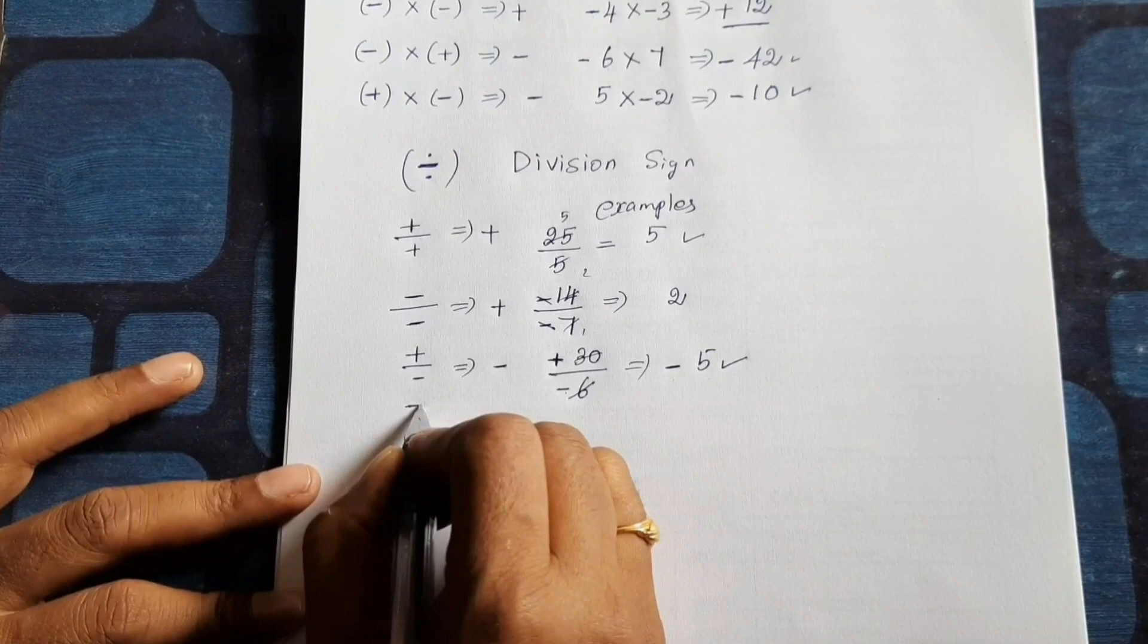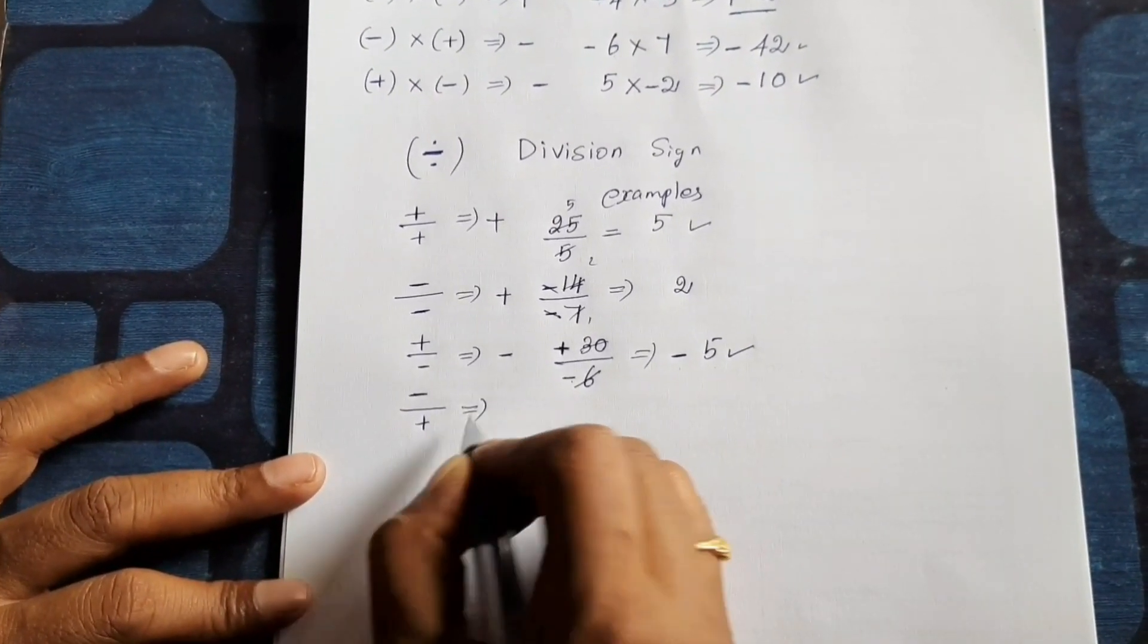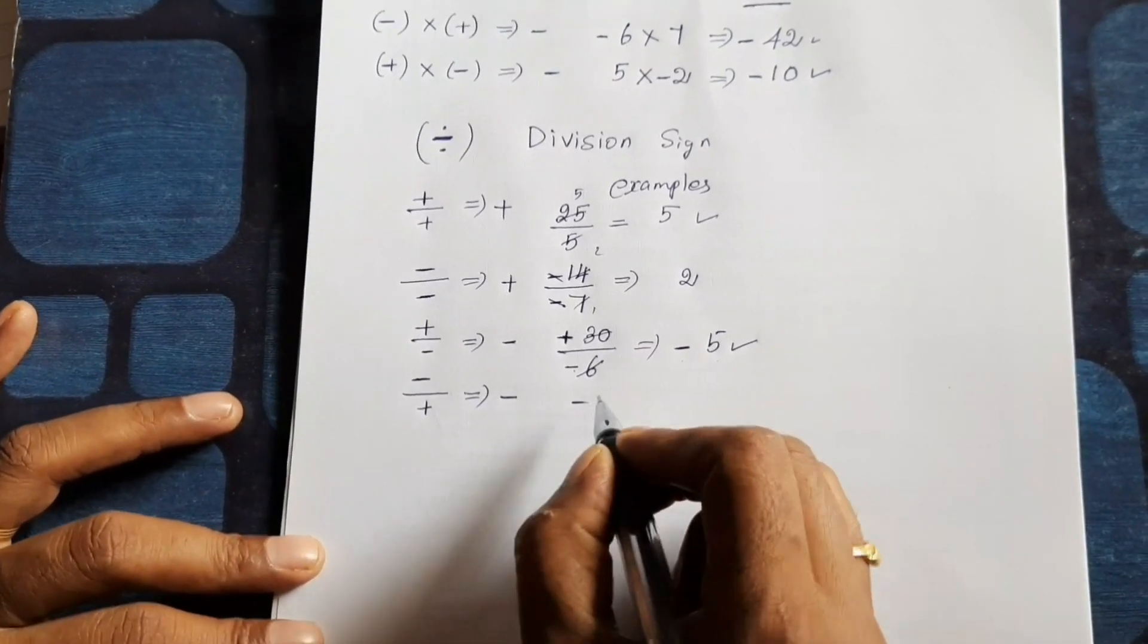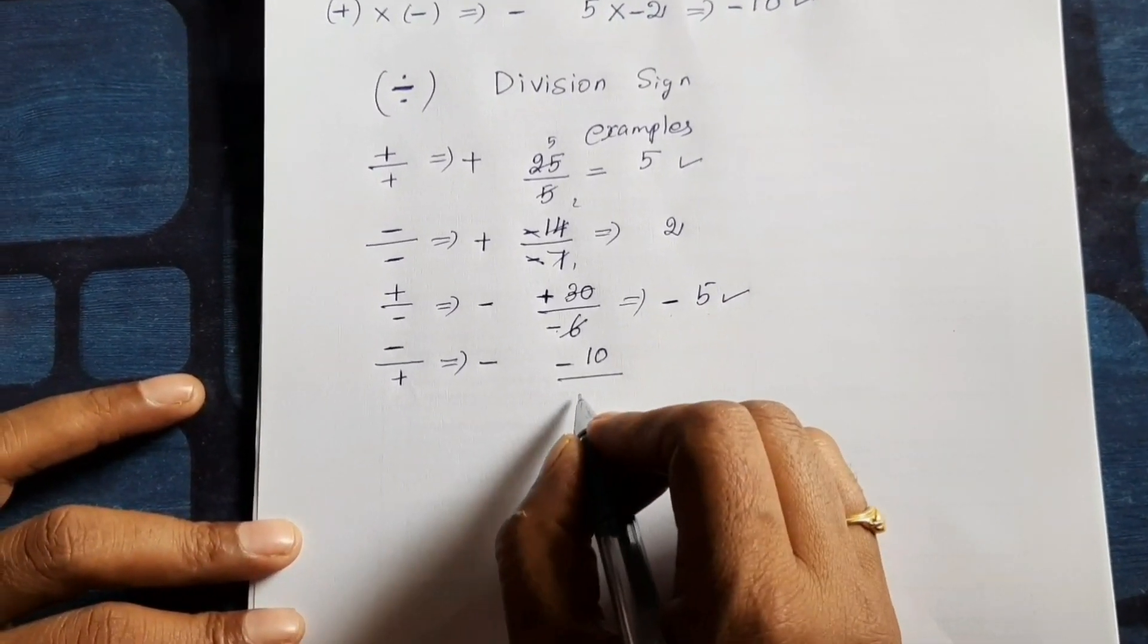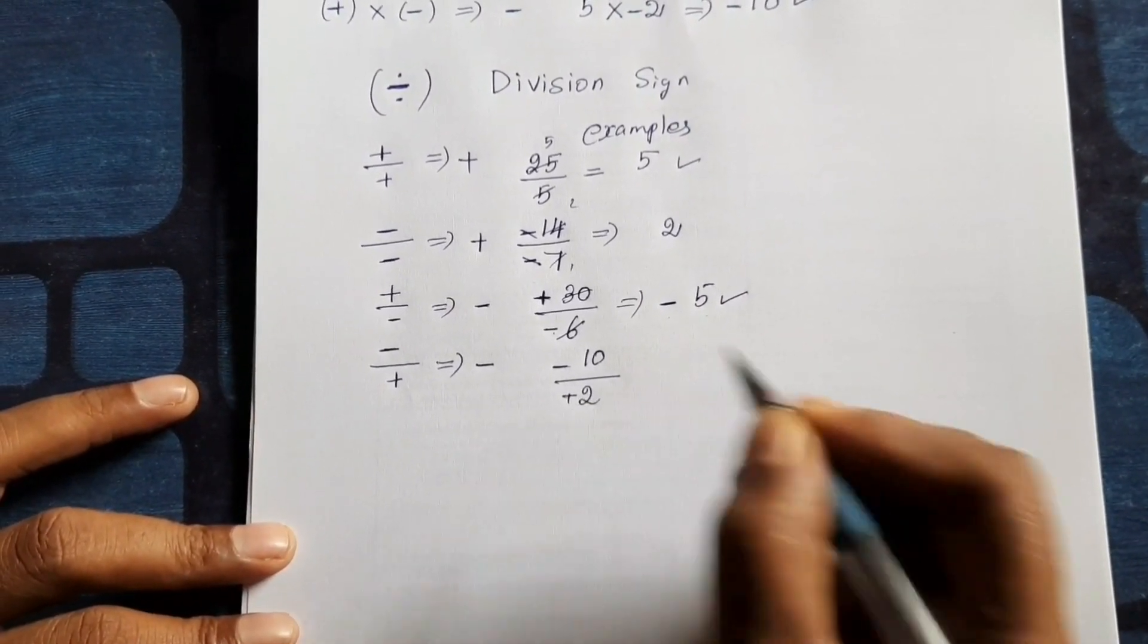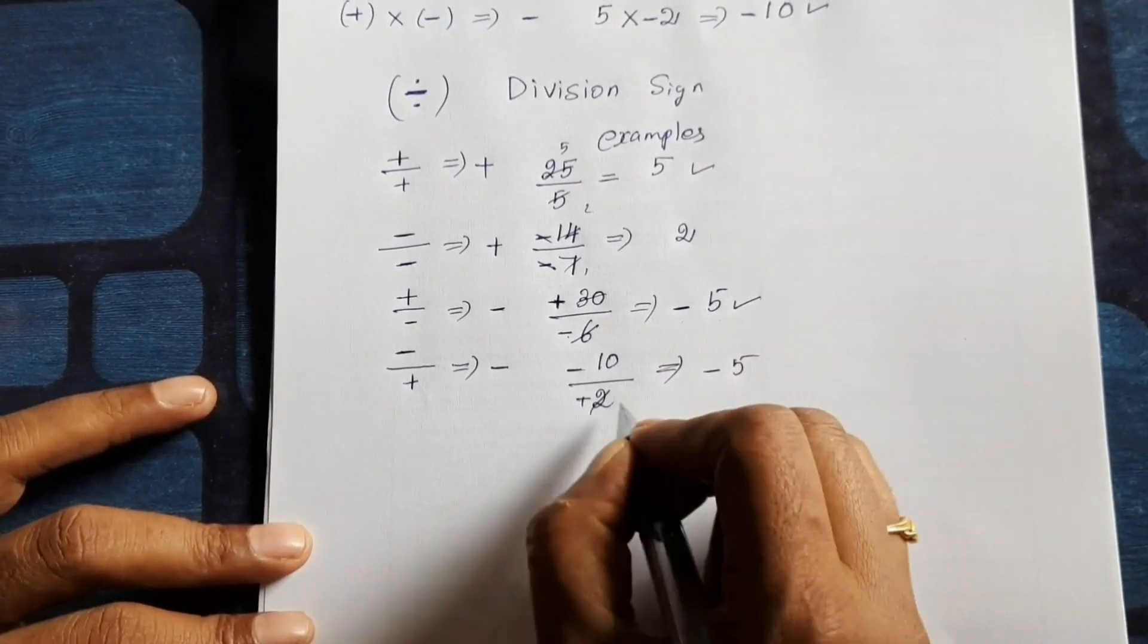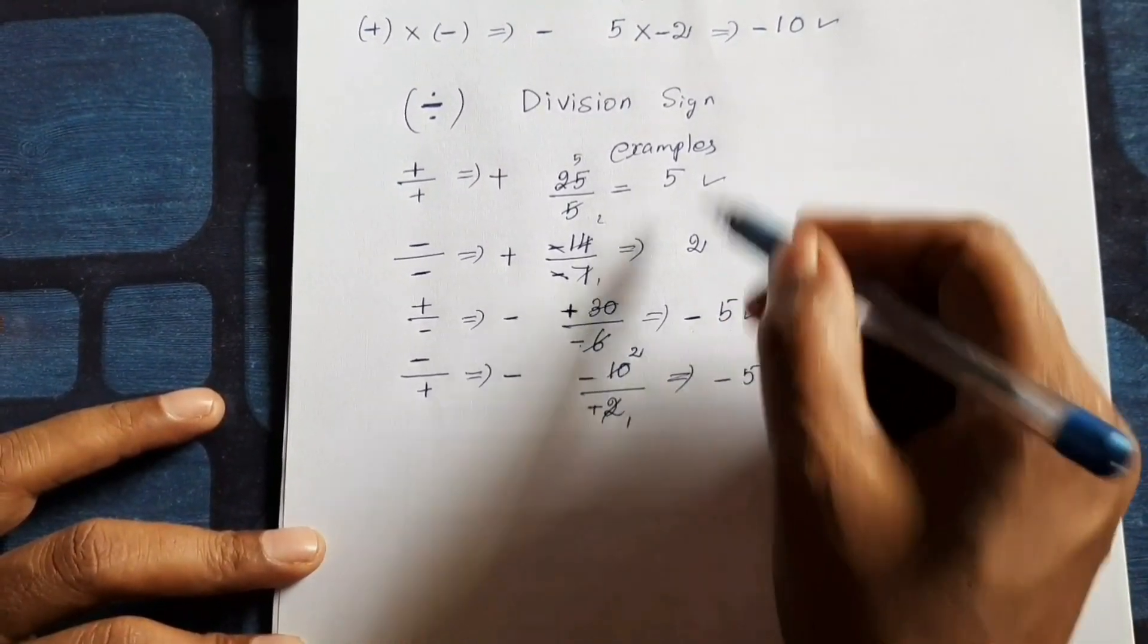Next, minus divided by plus gives same thing, negative. So minus 10 divided by plus 2 gives negative 5. 1 or 2 or, so, understood this concept?